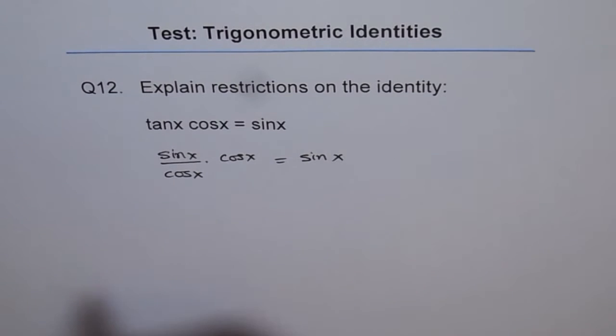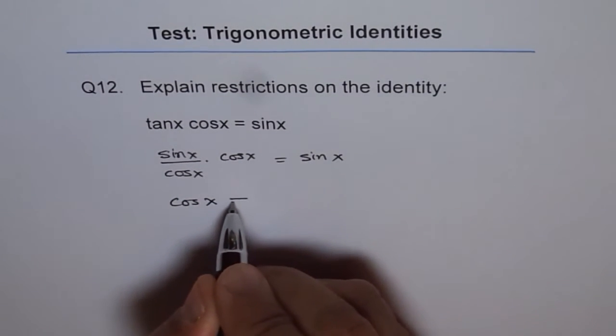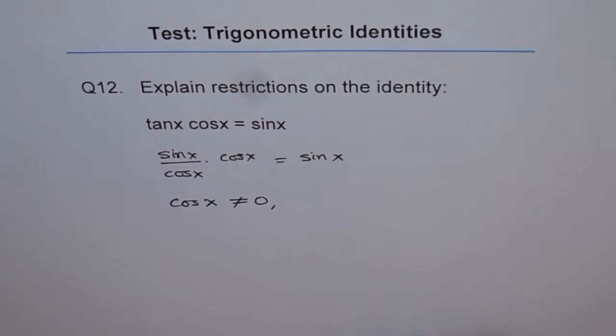The restriction is that denominator cannot be 0. That means cos x should not be equal to 0. So that leads to restrictions. So when is cos x equals to 0?